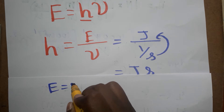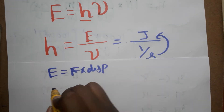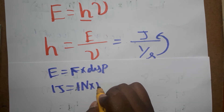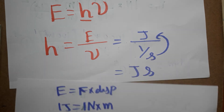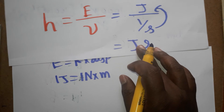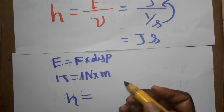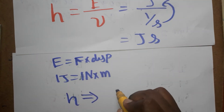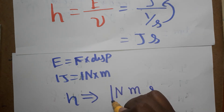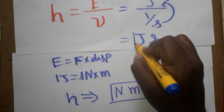Another unit: since energy equals force into displacement, 1 Joule equals 1 Newton times 1 meter. So instead of writing Joules, the unit of Planck constant can also be written as Newton·meter·second. This is another valid unit of Planck constant.